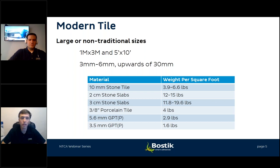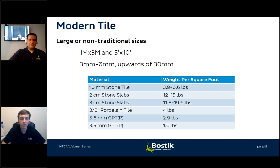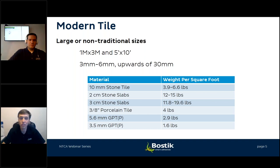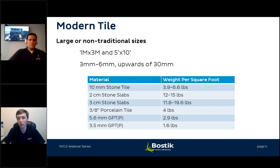Bostik has led this marketplace with the introduction of Bosti-Set, followed by developments in primers, levelers, mortars, and grouts optimized for gauged porcelain tile installation. Compared to traditional porcelain at roughly three-eighths of an inch thick and four pounds per square foot, these materials at 5.6mm and 3.5mm weigh only 1.6 to 2.9 pounds per square foot — a significant benefit from an engineering and structural perspective.